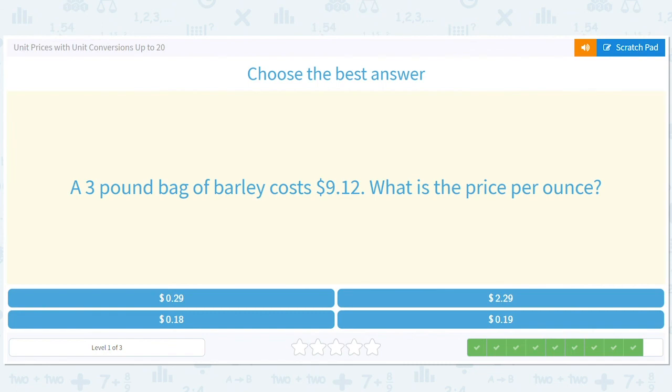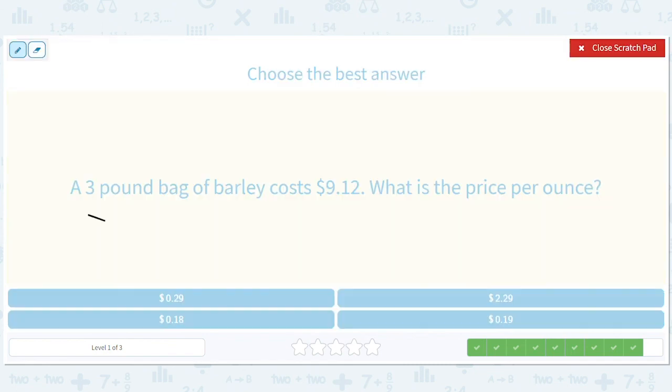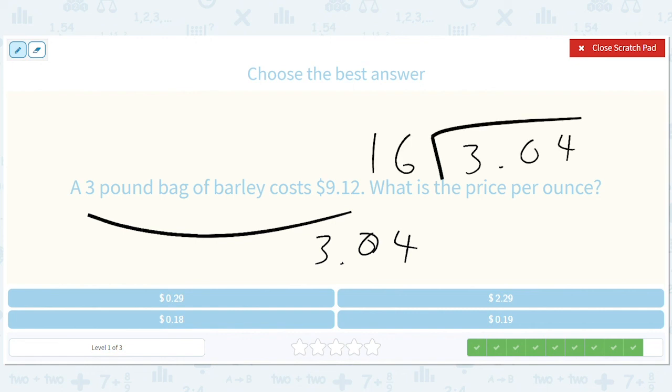A three pound bag of barley cost $9.12. So 9.12 divided by three, that's sort of easy, it's just three dollars and four cents. What is the price per ounce? So 304 divided by 16. We end up with 19 cents.